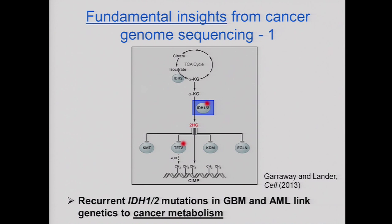Isocitrate dehydrogenase is a member of the Krebs cycle, the TCA cycle. Any of you who took college biochemistry would have had to memorize this and then forget it six weeks later — it was a very forgettable enzyme. But lo and behold, it's mutated in a large fraction of brain cancers and AML, and at a lower frequency in some other cancers.